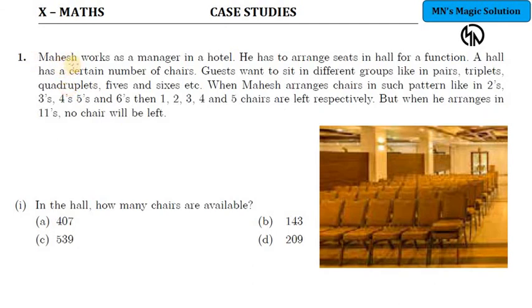Question number one in case studies: Mahesh works as a manager in a hotel. He has to arrange seats in a hall for a function. A hall has a certain number of chairs. Guests want to sit in different groups like in pairs, triplets, quadruplets, fives and sixes. When he arranges chairs, a specific number of chairs are left. When he arranges in twos, one chair is extra. When arranging in threes, two chairs are extra.